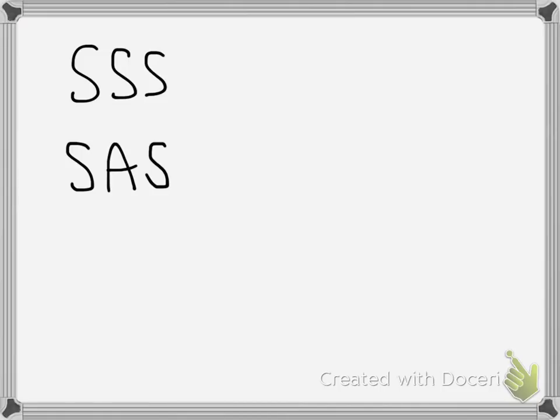There are going to be picture examples here in just a second, so if this isn't making sense, pictures are on the way. The next one we have is ASA, which is short for angle, side, angle. This is whenever you have two pairs of congruent angles in the triangles, and then the side between those two angles is also congruent. That way you can say the triangles are congruent.